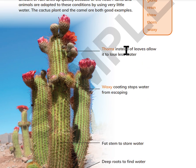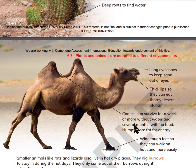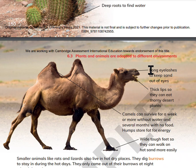For the cactus: thorns instead of leaves allow it to lose less water, and a waxy coating stops water from escaping. There is a stem to store water and deep roots to find water. For the camel: long eyelashes keep sand out of its eyes. Tough lips allow them to eat desert plants. Camels can survive a week or more without water and several months with no food. Humps store fat for energy.